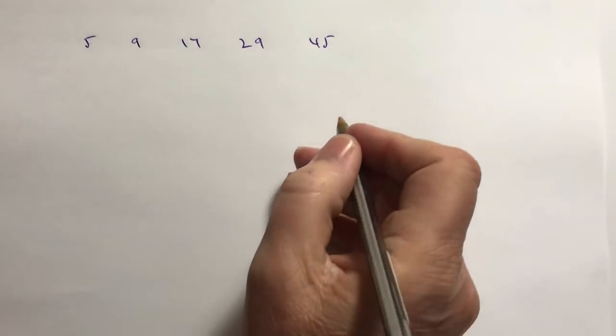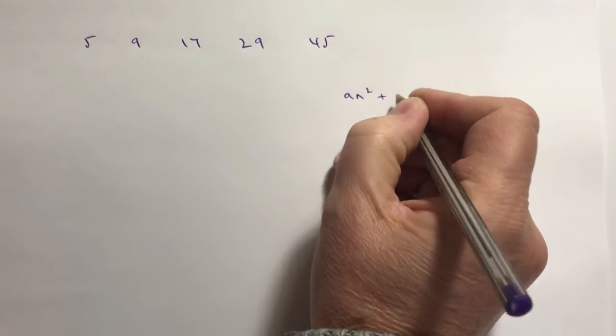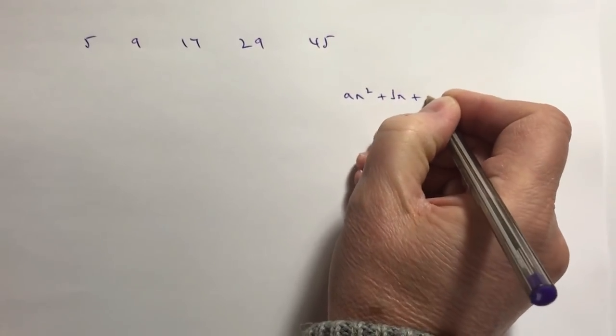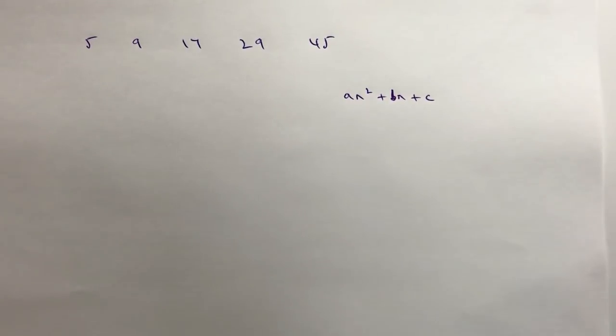Basically what we're trying to do is come up with a description of the sequence. The general form of it is an² + bn + c, so all we're going to do is work out the value of a, b, and c.